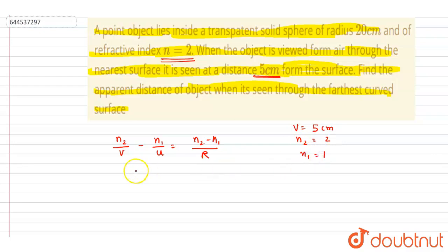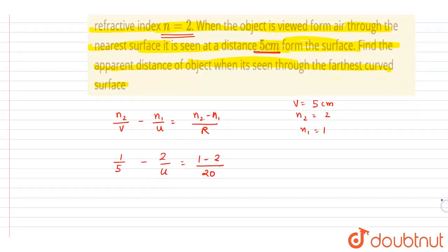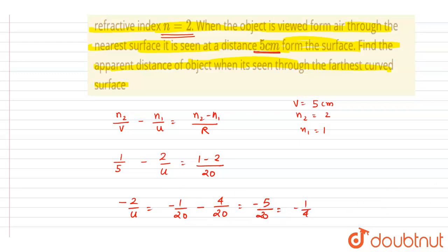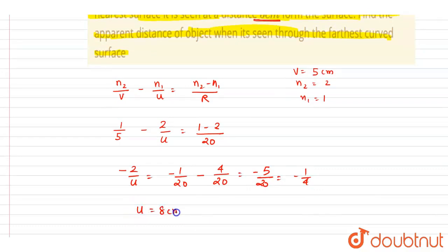The object is kept in a medium of refractive index 2, so n2 equals 2 and n1 equals 1. Putting the values: 1 by v equals 1 by 5, minus 2 by u, and 1 minus 2 by R. With radius given, we get minus 2 over u. Solving, we get u equals minus 8 from this equation — giving 1 by 4, so u equals this value.